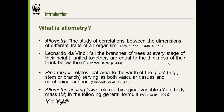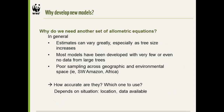Allometric scaling laws were developed by West et al., relating a biological variable to body mass in a general formula, and the important thing is that that's an exponential relationship. So back to the question: why do we need another set of biometric equations? In general, estimates vary greatly between equations, especially as tree size increases. One reason for this is that most models have been developed with very few or even no data from very large trees, and historically there's been quite poor sampling across geographic and environmental space.